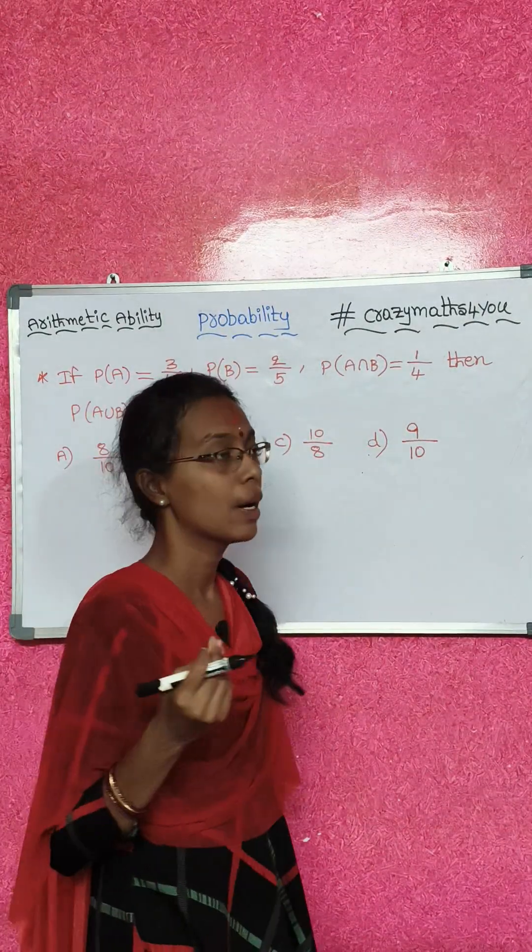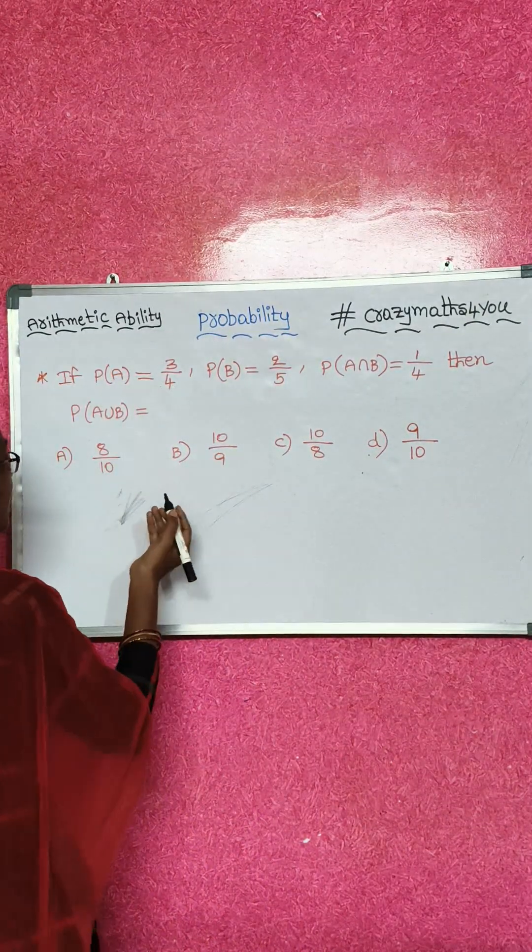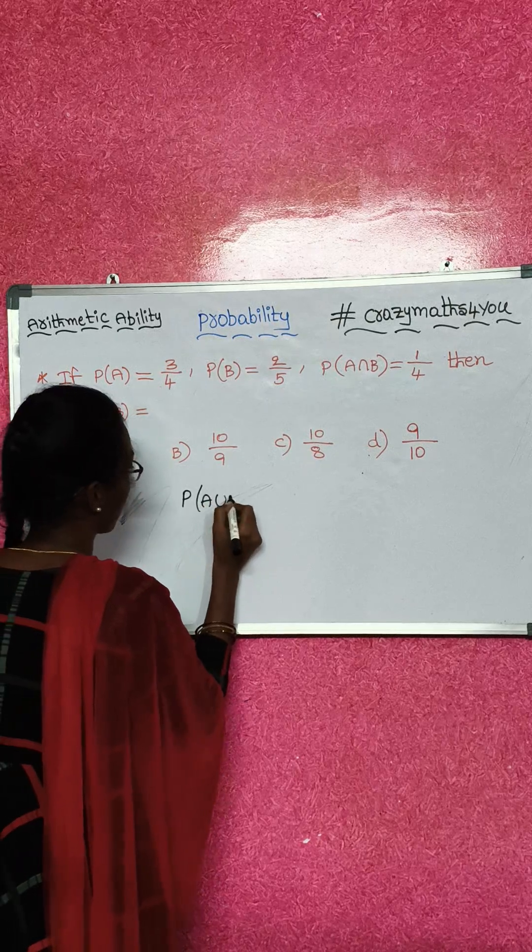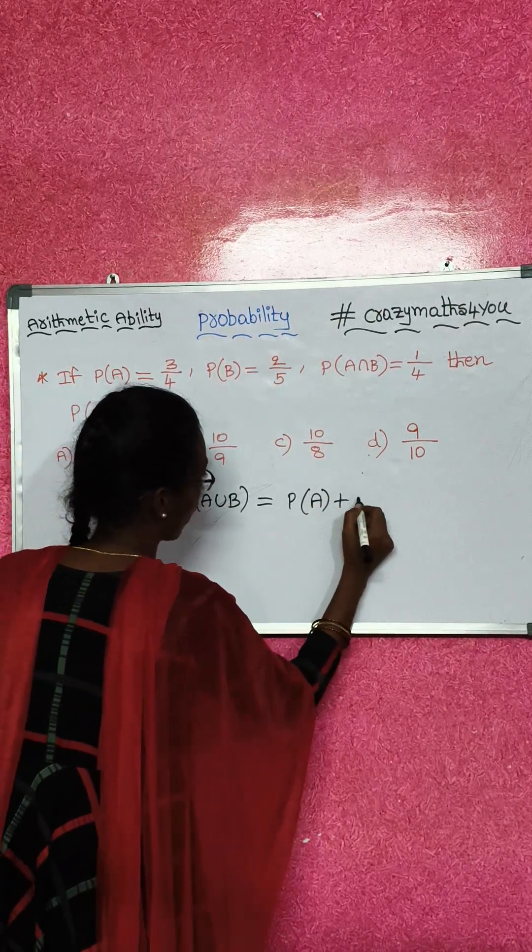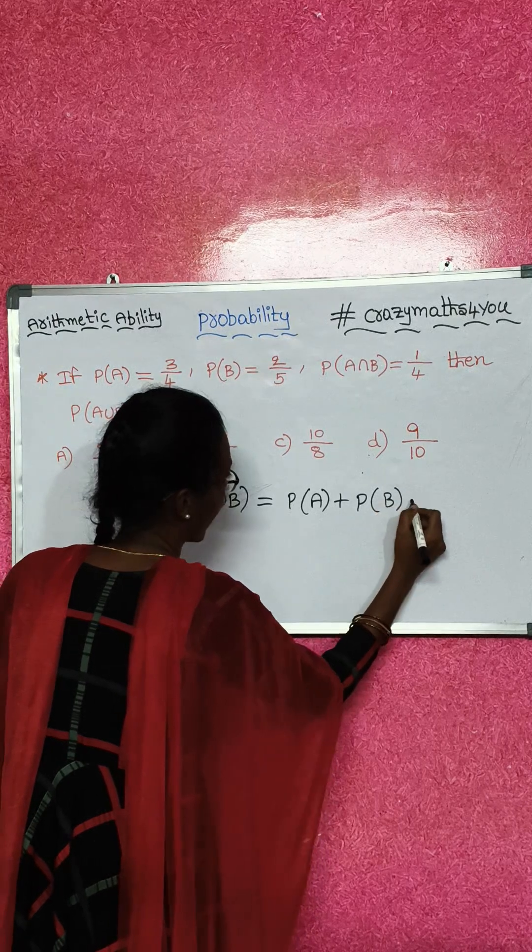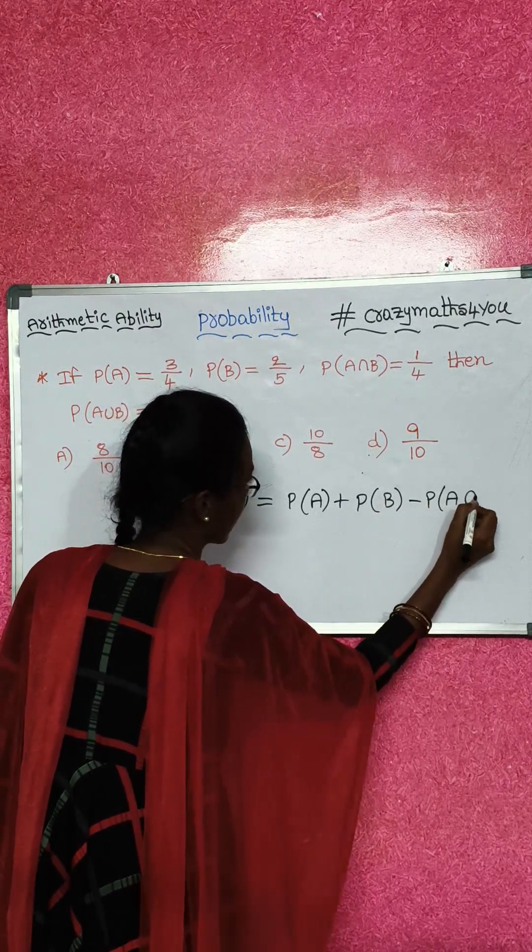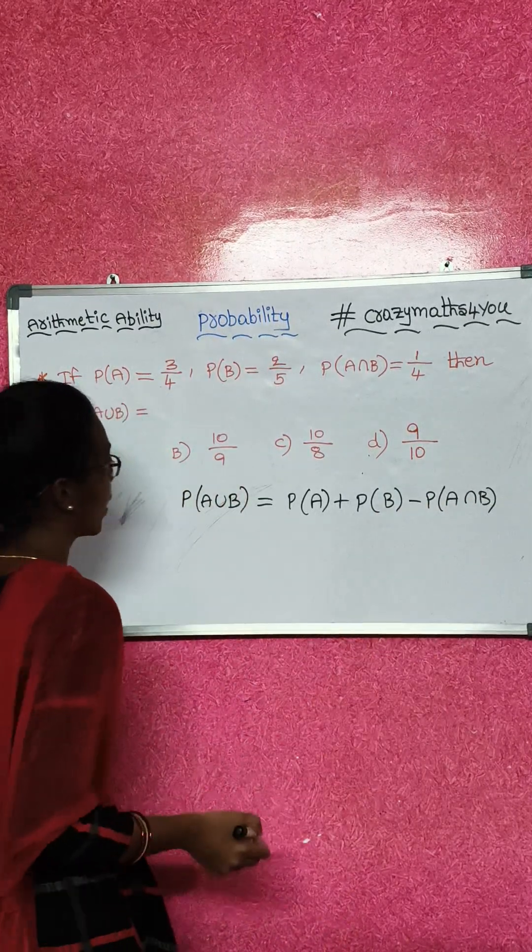This is sum of probabilities, addition of probabilities formula. P(A∪B) equals P(A) plus P(B) minus P(A∩B). I want to find out the formula.